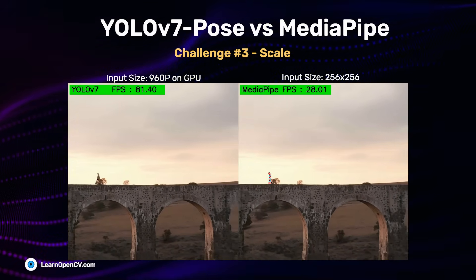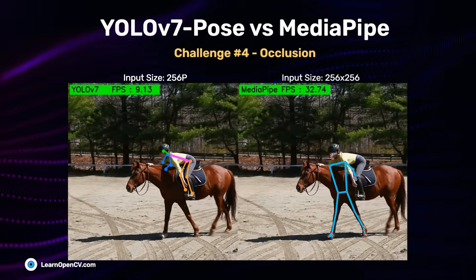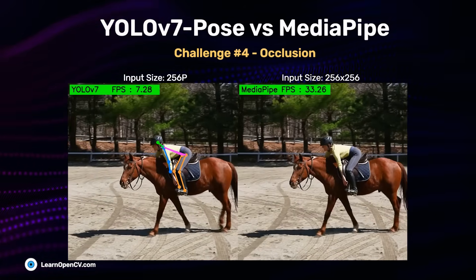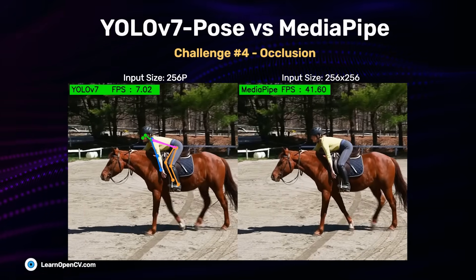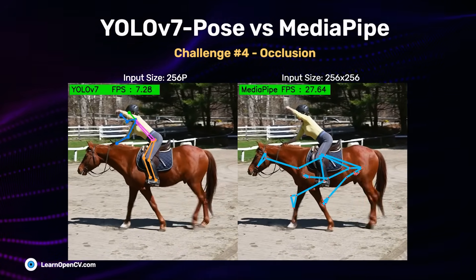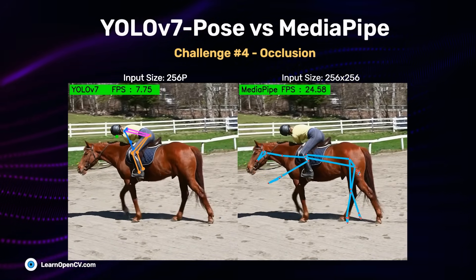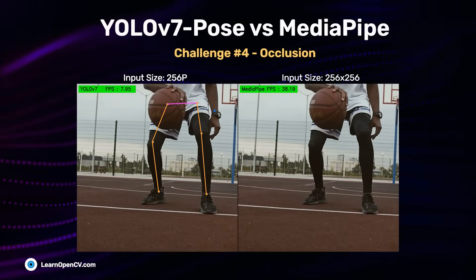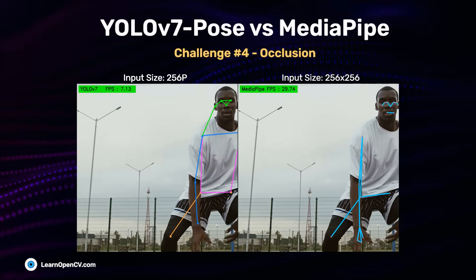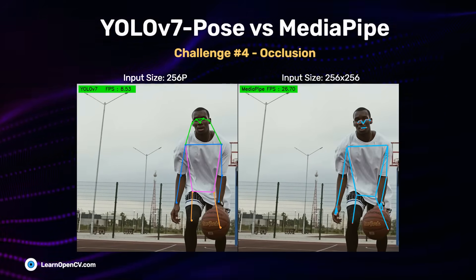The other common challenge is occlusion. In one specific example, MediaPipe mistakenly identifies horses' legs as human, while YOLO V7 correctly detects the occluded human legs. However, this seemed uncharacteristic of MediaPipe, so we tested more videos. In additional footage, both models perform decently when only part of a person is visible, though on closer inspection YOLO outputs look better for occlusion.